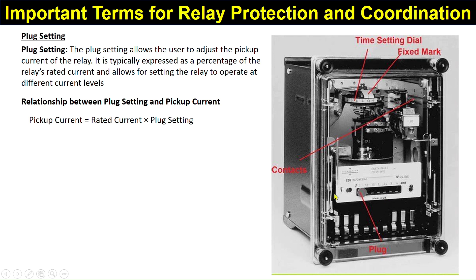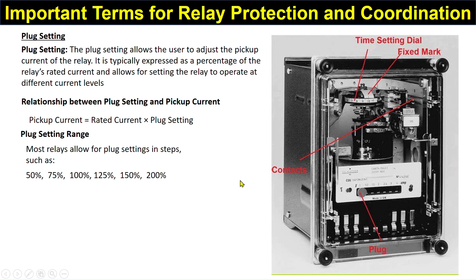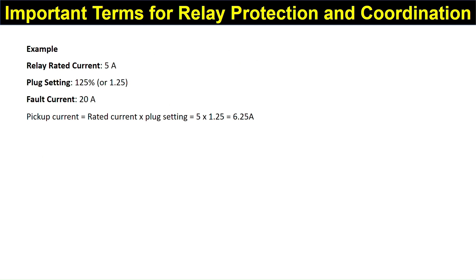Plug setting range: most relays allow plug settings in steps such as 50%, 75%, 100%, 125%, 150%, and 200%. For example, if the relay rated current is 5 A and plug setting is 125%, the pickup current is 5 × 1.25 = 6.25 A. Since the fault current of 20 A exceeds 6.25 A, the relay gets activated.